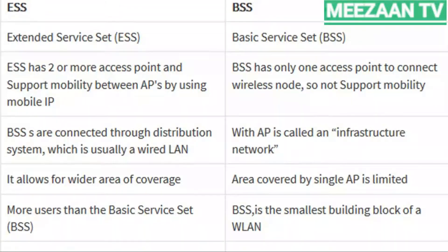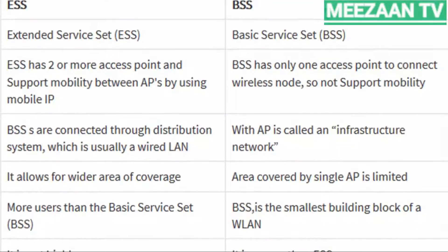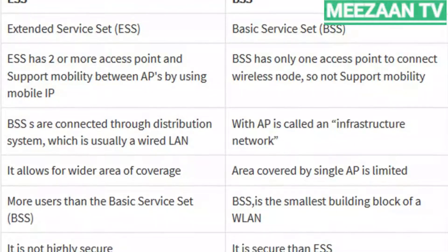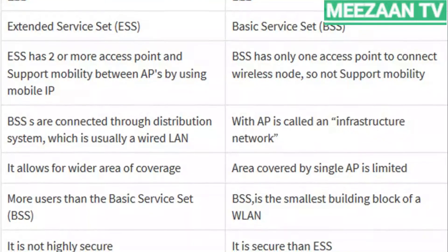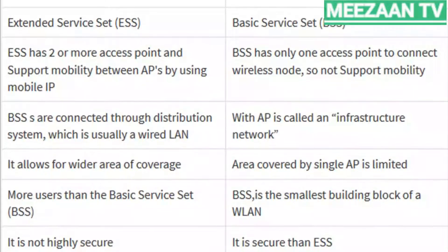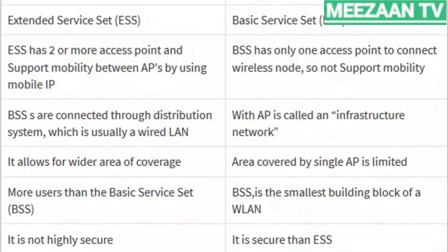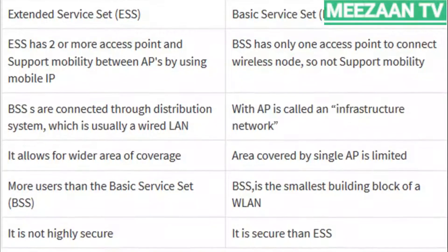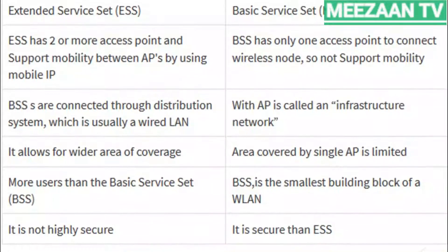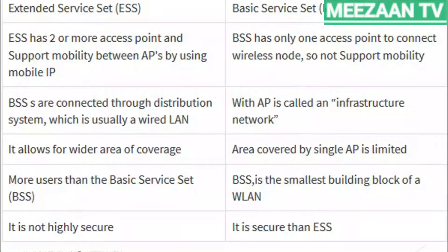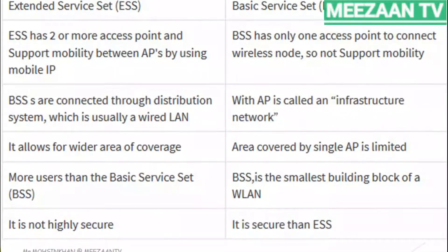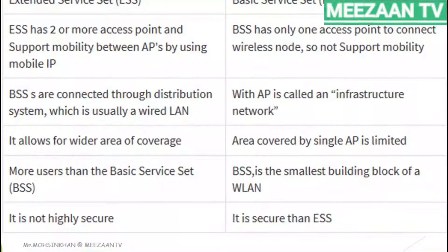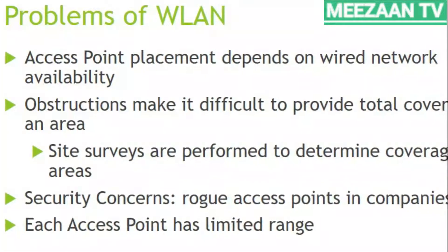The comparison of BSS and ESS: BSS has only one access point and does not support mobility, while ESS has two or more access points and supports mobility between access points using mobile IP. BSS is called an infrastructure network with limited coverage area, whereas ESS has wider coverage. ESS supports more users than BSS, while BSS is more secure than ESS.